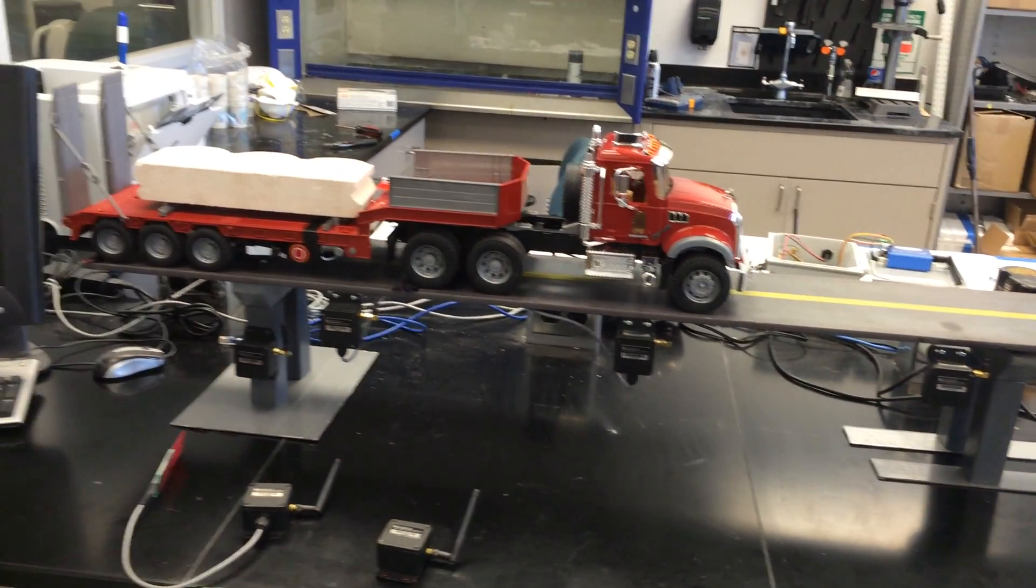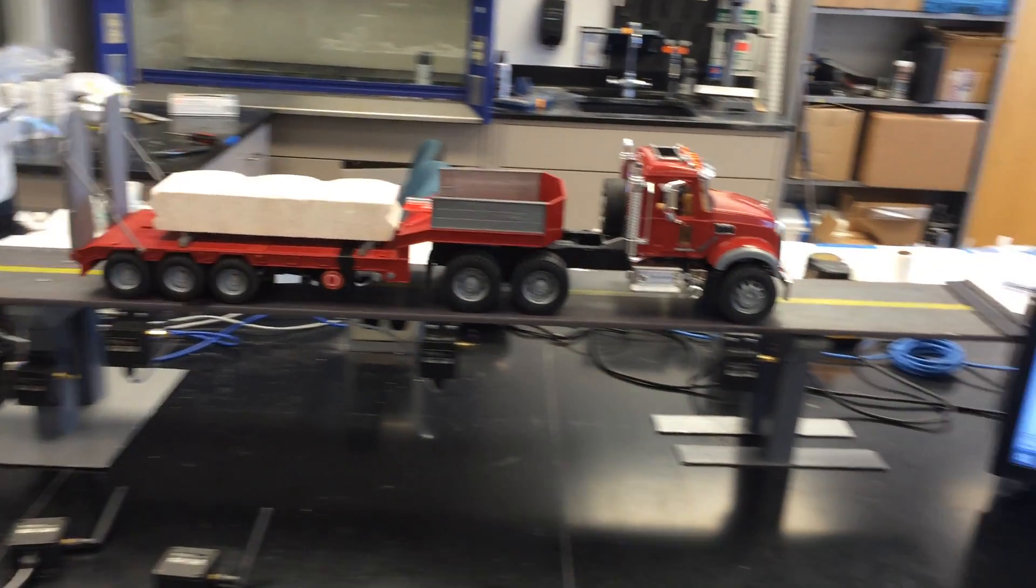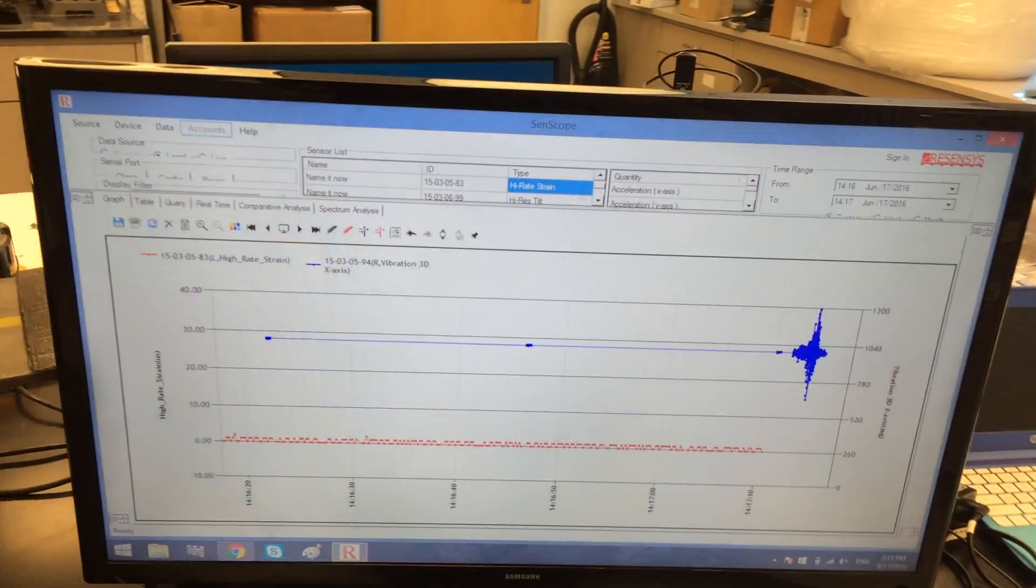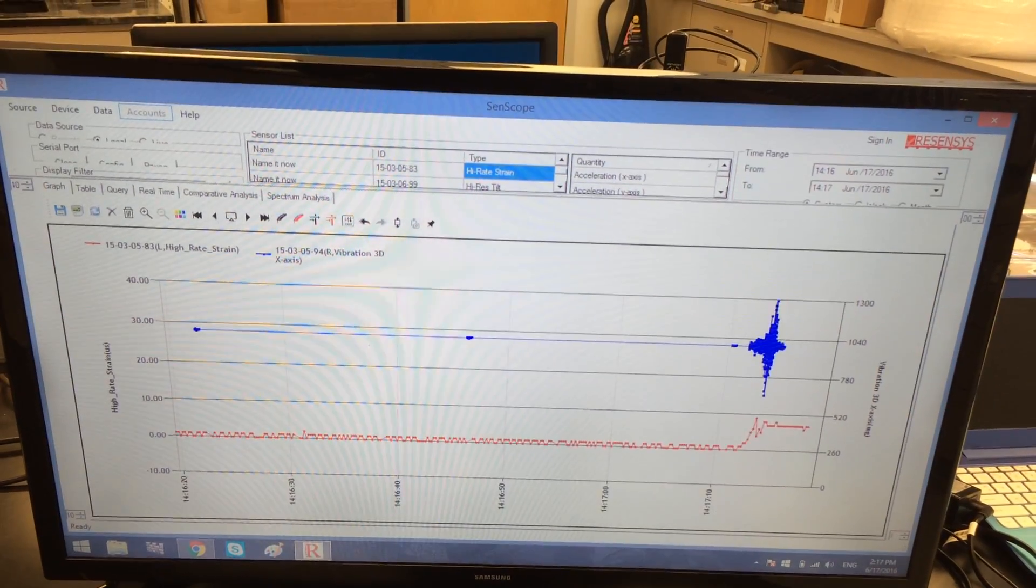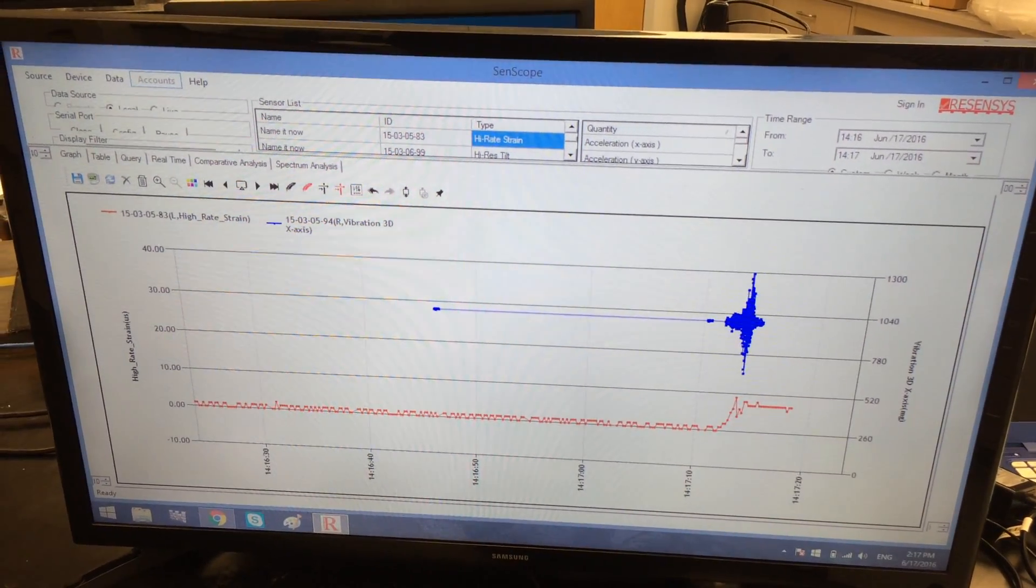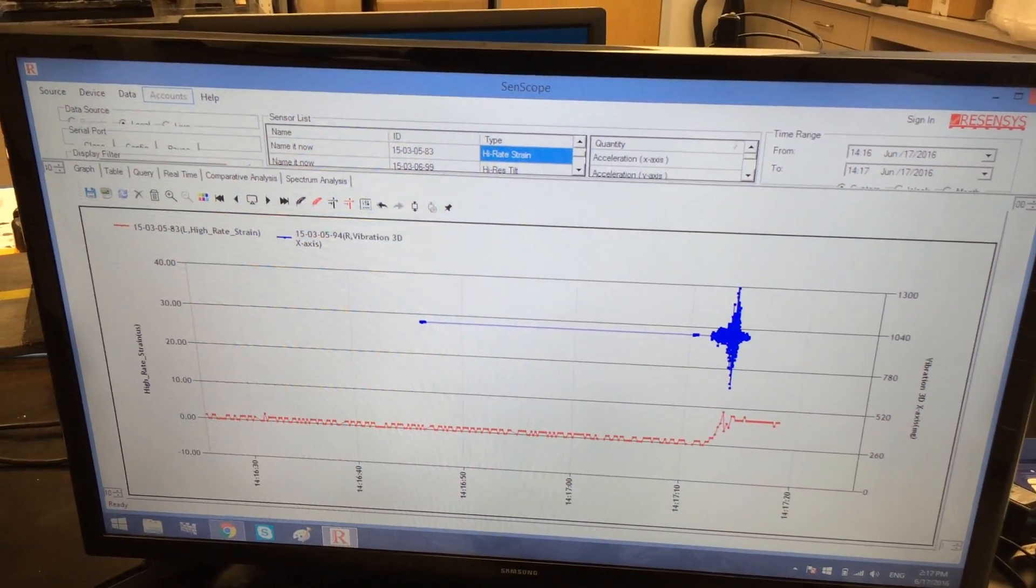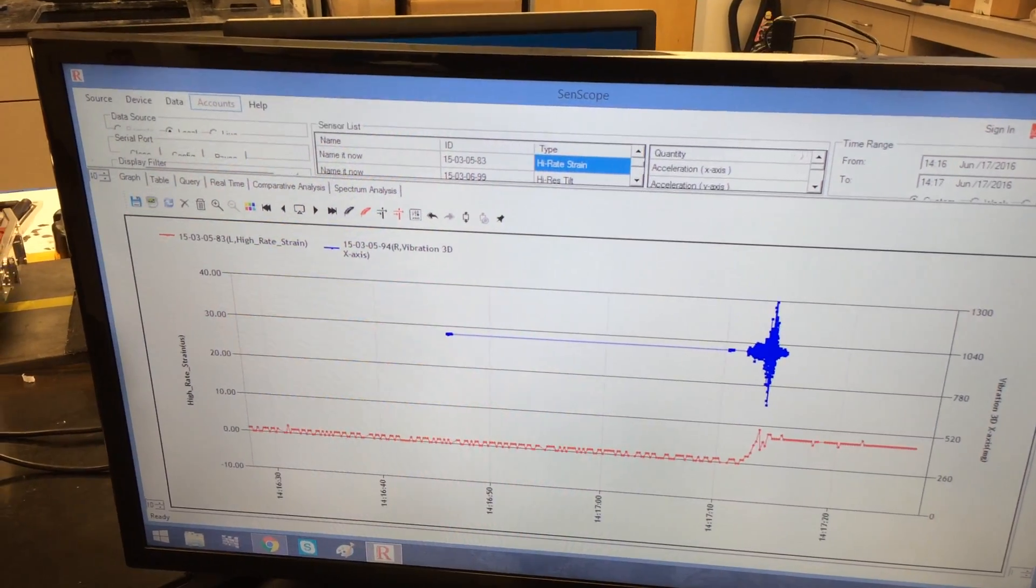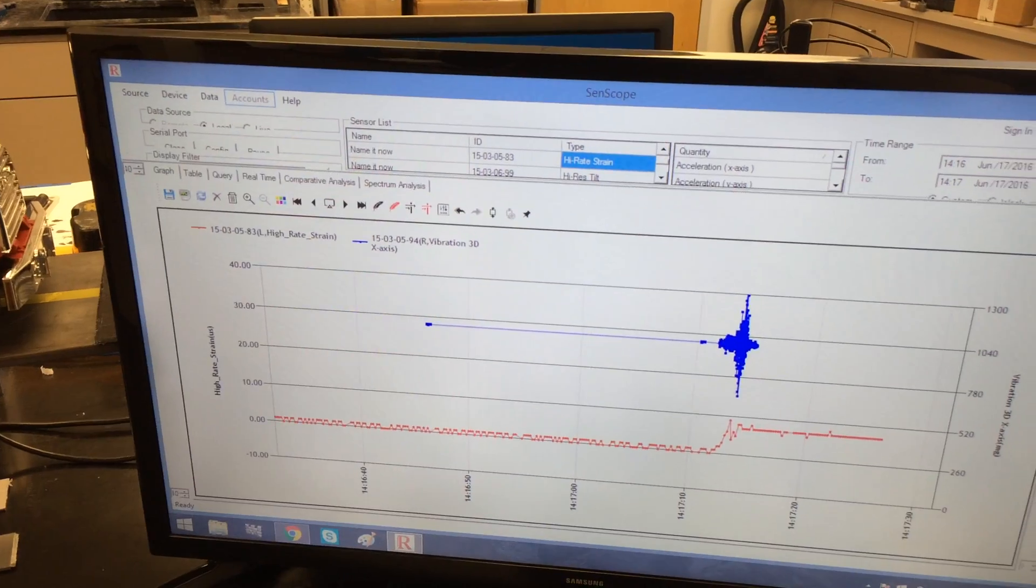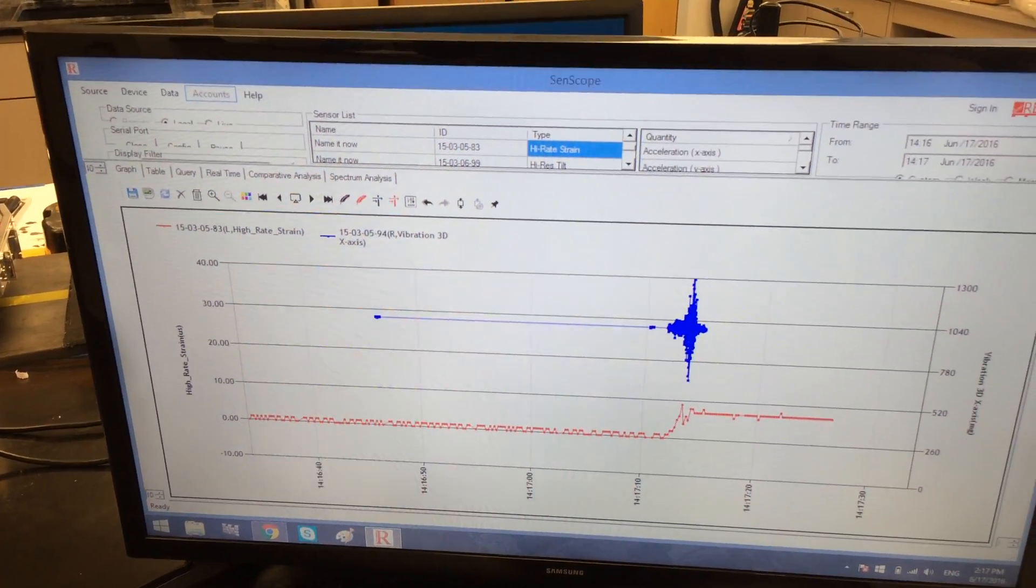Now, we move the truck to the center of the span. The vibration waveform caused by the moving truck is shown in a blue graph. Also, now the truck being at the center, more strain is applied to the deck compared to the situation where most of the weight was directly on the pier. As seen in a red graph, the strain has increased now that the truck weight is at the center.